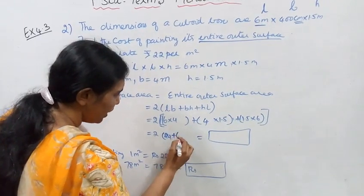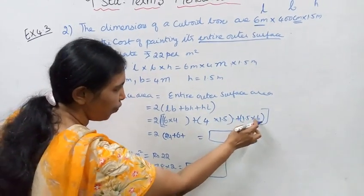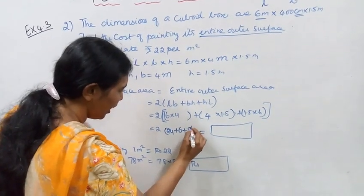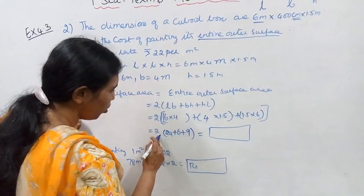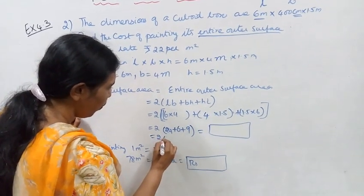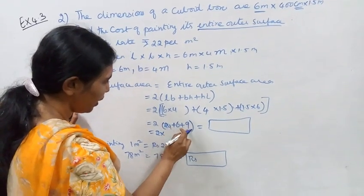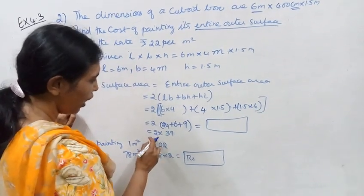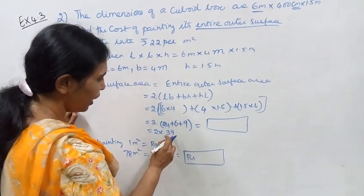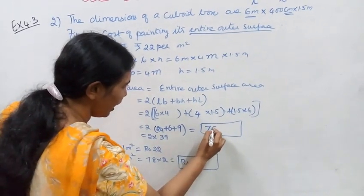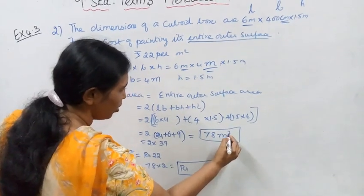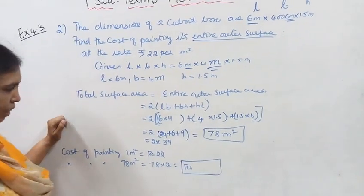Therefore, plus 6, 1.5 into 6 is 9. So 2 into 24 plus 6 plus 9, which equals 2 into 39, equals 78. The unit is meter square.